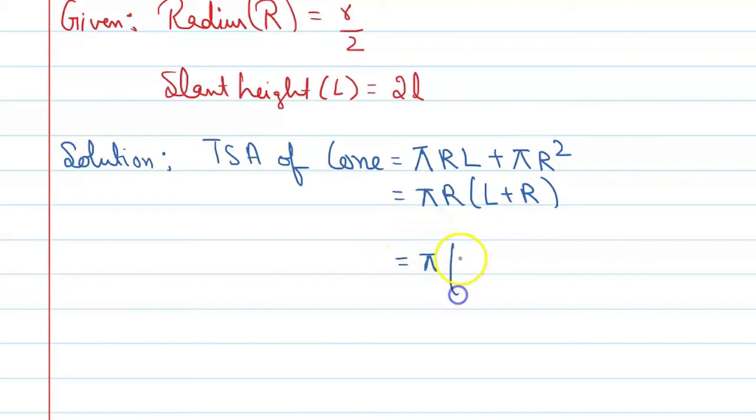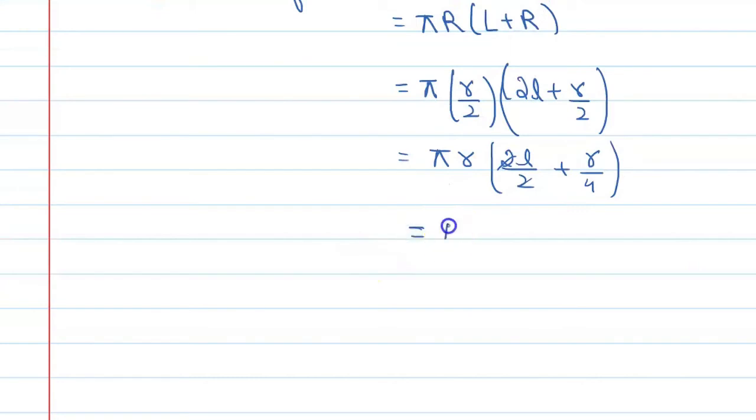It is pi times r by 2, and it is 2L plus r by 2. When you take this value, it is small r. It means that this value is multiplied. So this 2L and this 2 cancel out like this. 2L upon 2 plus r upon 4. This 2 and this 2 will get cancelled. So you can say the final answer is pi r times L plus r upon 4, according to the given condition.